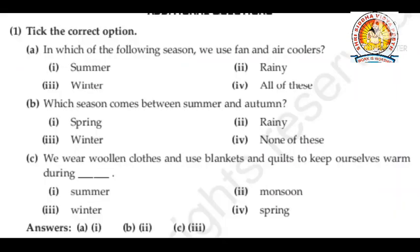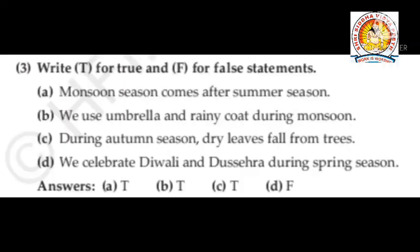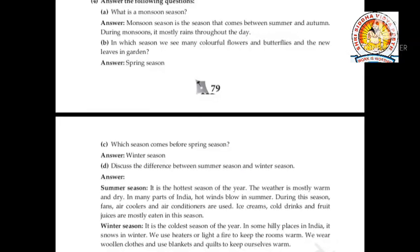Choose the correct option. In which season do we use fans and air coolers? Summer season. Which season comes between summer and autumn? Rainy season. We wear woolen clothes and use blankets to keep ourselves warm during winter season. Fill in the blanks: Autumn season comes after monsoon and before winter. In spring, the climate is pleasant — neither too cold nor too hot. Monsoon season is also called rainy season. True or false: Monsoon season comes after summer — True. We use umbrella and raincoat during monsoon — True. During autumn, dry leaves fall from trees — True. We celebrate Diwali and Dussehra during spring season — False.